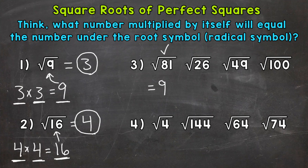Moving on to the square root of 26. We need to think: any number that multiplies by itself to equal 26? We know 5 times 5 equals 25 — close, but not quite — and 6 times 6 equals 36. So the square root of 26 is going to be somewhere between 5 and 6. It's not a perfect square and won't give us a whole number answer.